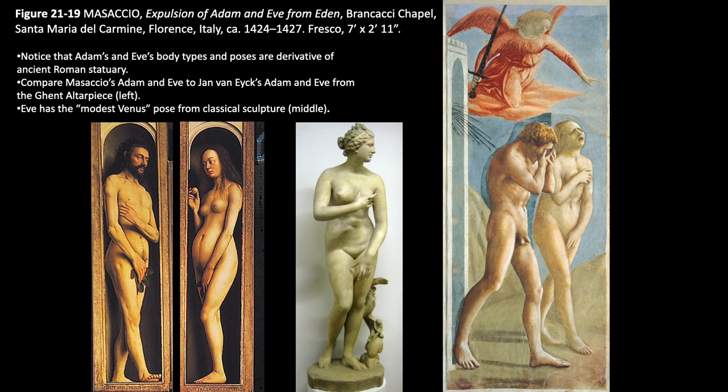The body types can be described as classical, where you see a blend of realism with idealizing the human form. Notice that Adam and Eve's body types and poses are derivative of ancient Roman statuary. Compare Masaccio's Adam and Eve to Jan van Eyck's Adam and Eve from the Ghent Altarpiece on the left. Eve has the modest Venus pose from classical sculpture.